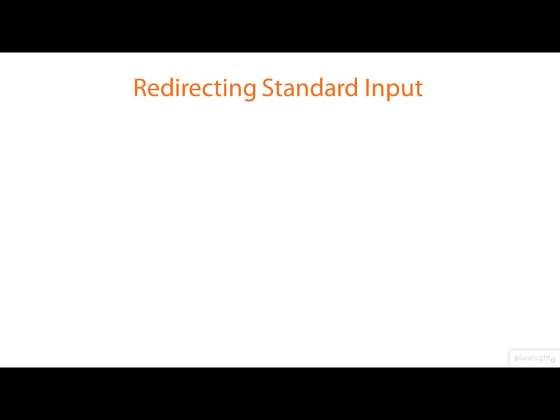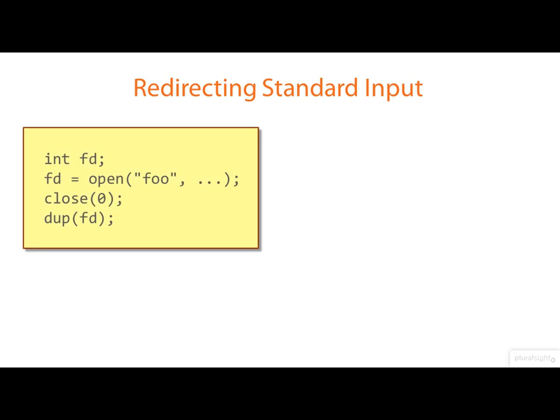I'll show you two ways. Here we're going to connect our standard input to the file foo. We begin by opening the file—we get back a regular file descriptor fd. We close file descriptor zero (that's our standard input), then we dup fd.